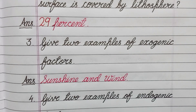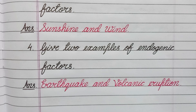Question number three: Give two examples of exogenic factors. Answer: Sunshine and wind. Question number four: Give two examples of endogenic factors. Answer: Earthquake and volcanic eruption.